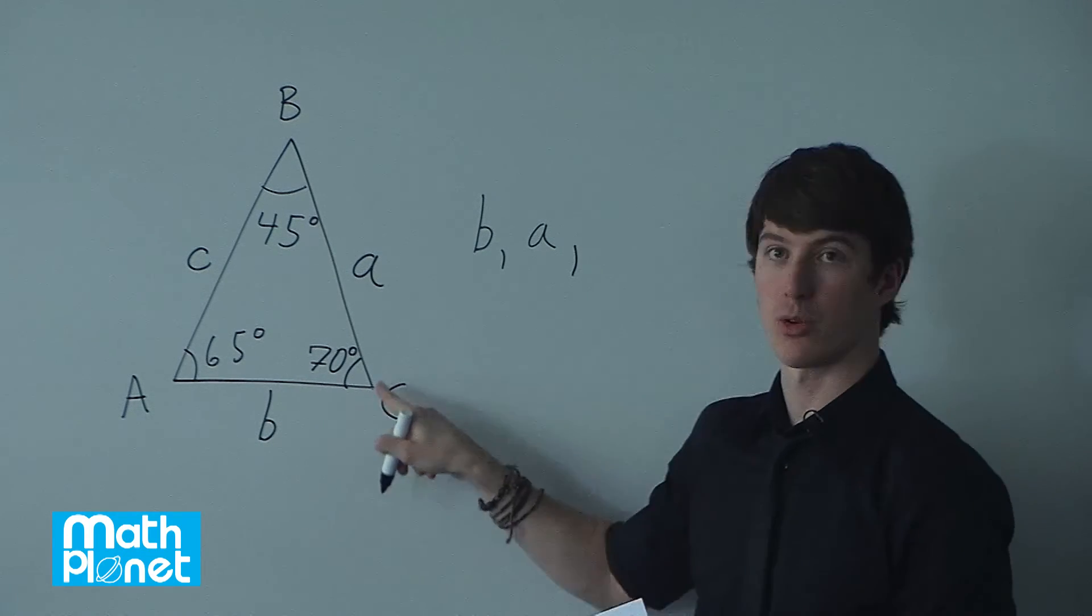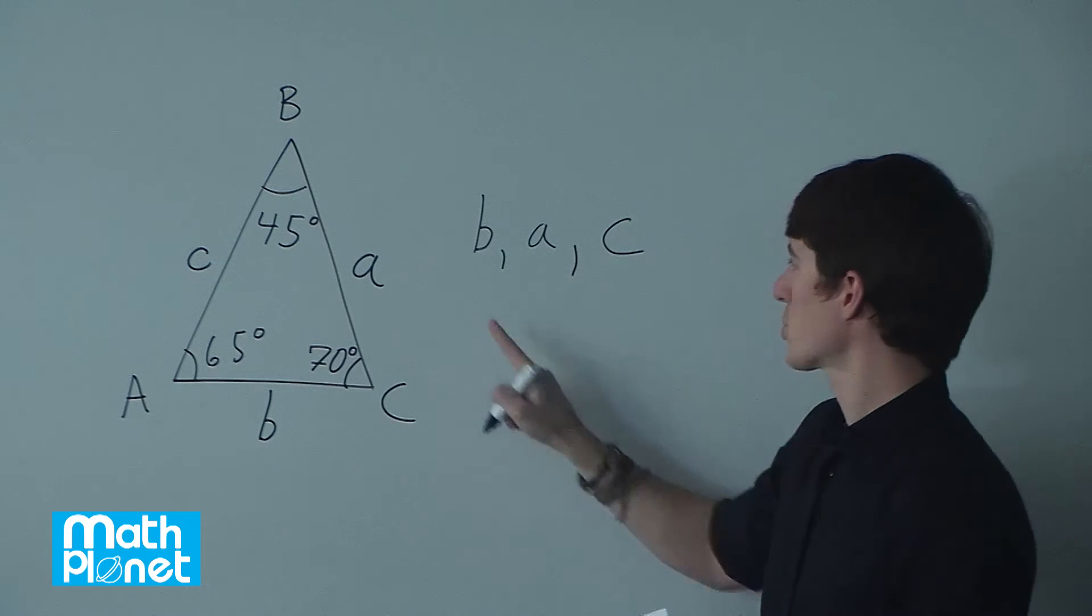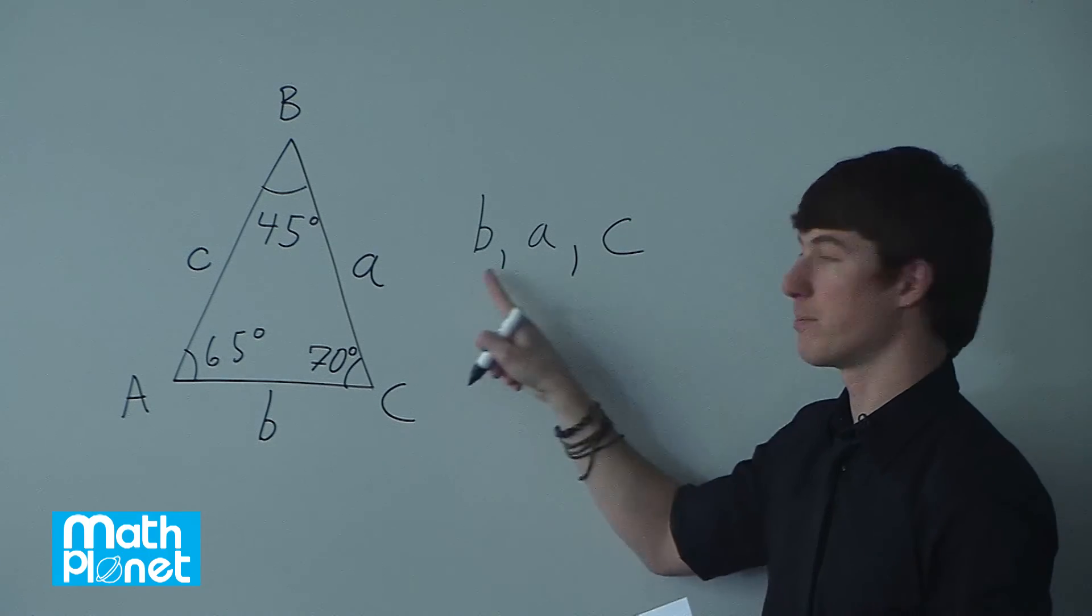And finally the longest side corresponds to C, so c. So shortest, middle, longest: b, a, c.